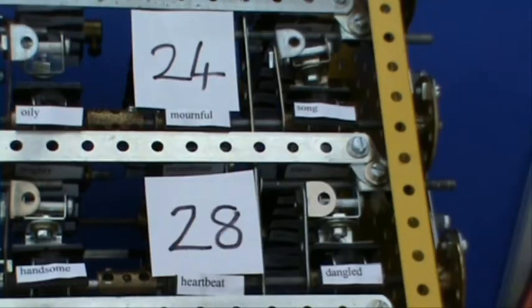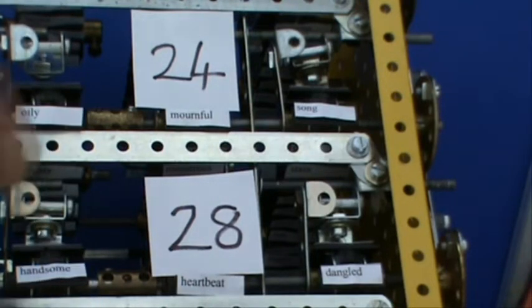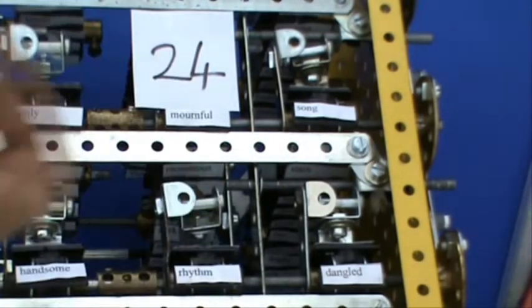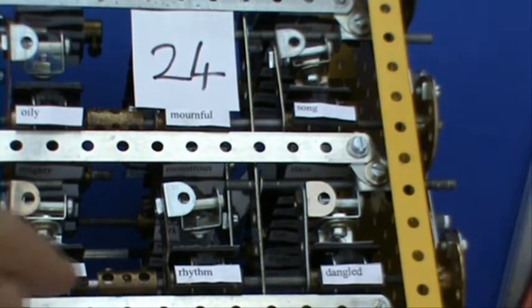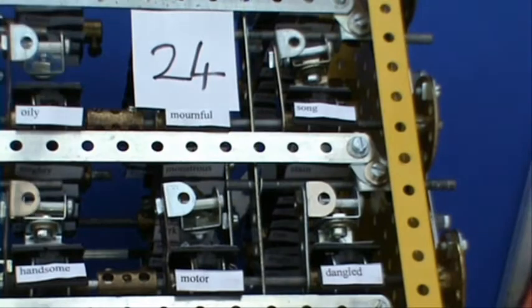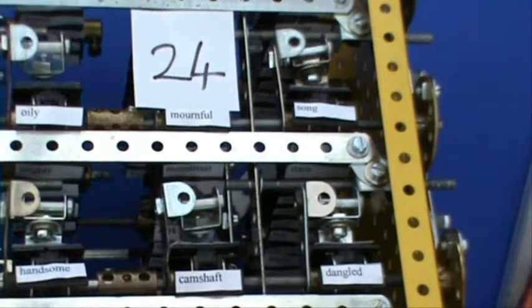Only two sets of links have got even numbers in them, 24 and 28. So mournful can coincide with heartbeat, but not normally rhythm unless we advance it one manually. But mournful could correspond to motor, but not camshaft.